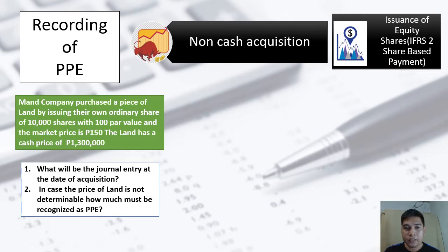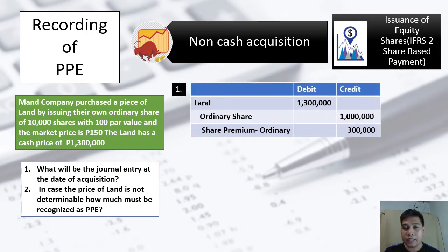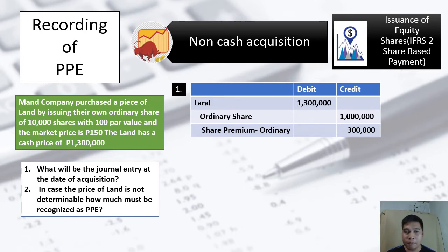Since the fair market value of the land was determined and is available, we will use the fair market value of the land. To record the acquisition, we debit Land 1.3 million, which is the cash price — the fair market value at the time of purchase. Then we record Ordinary Share at par value: 100 times 10,000 shares equals 1 million pesos.